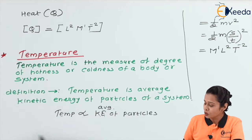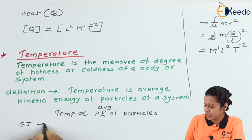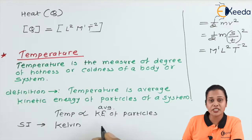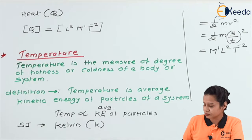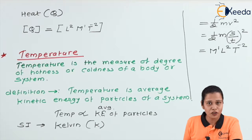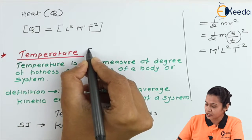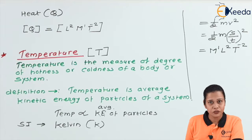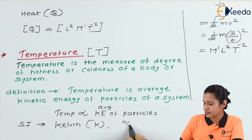The SI unit of temperature is Kelvin, denoted by capital K, and the symbol for temperature is capital T. Other units for temperature are degree Celsius and degree Fahrenheit.